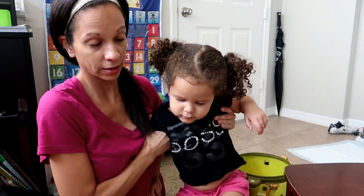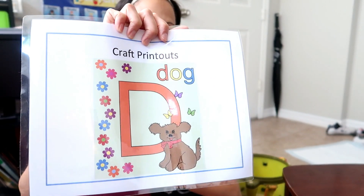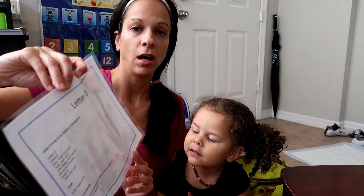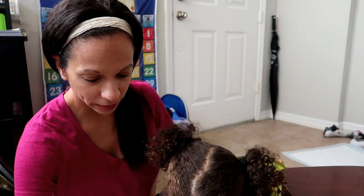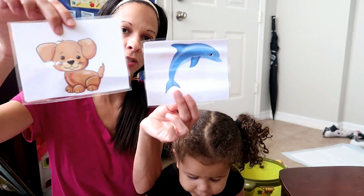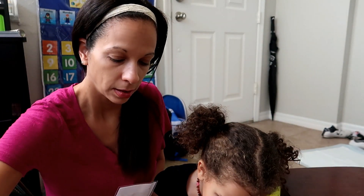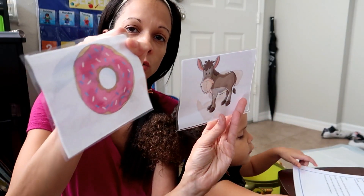So first, this is the letter D. I printed out a letter D to show Avalyn the letter D. On the back of it I laminated our letter D song. And with the song I have some letter D pictures. These will all be posted in the description of my video where you can download all the stuff for free.